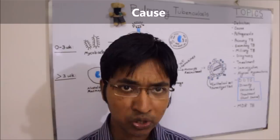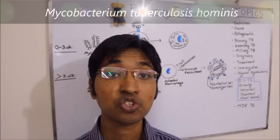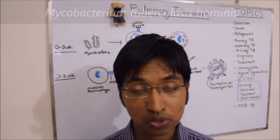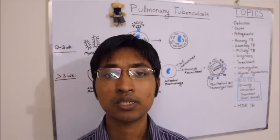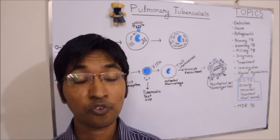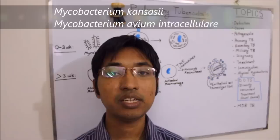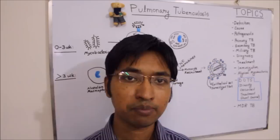Pulmonary tuberculosis is caused by the bacteria mycobacterium tuberculosis hominis — that is the most common strain. Particularly in immunocompromised persons, some other strains of mycobacteria can also result in pulmonary disease. Those other strains include mycobacterium kansasii and mycobacterium avium intracellulare — keep those two names in mind.